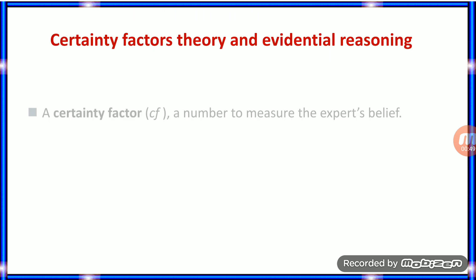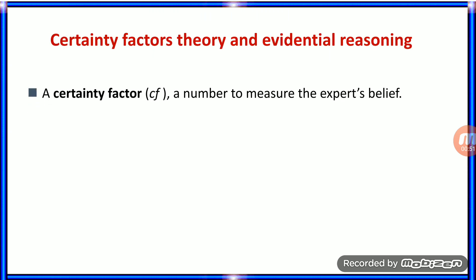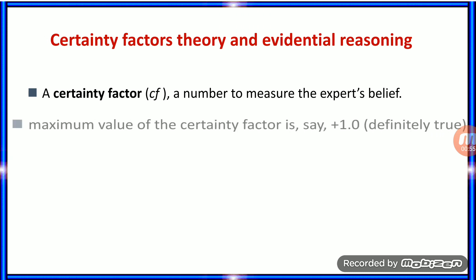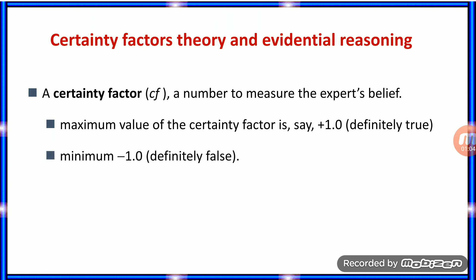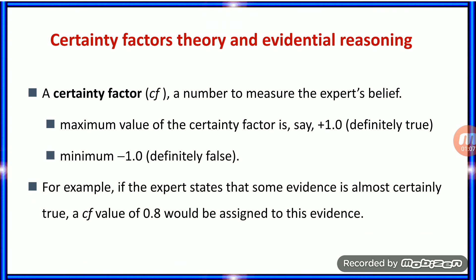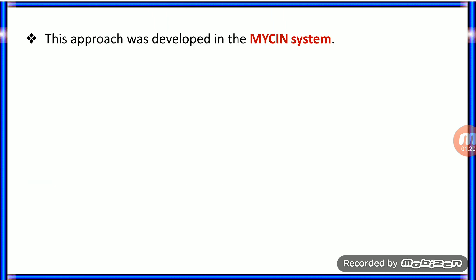So, what is a certainty factor? CF, in short form, is a number to measure the expert's belief. The maximum value of CF is plus 1, meaning it is definitely true. And if it is negative 1, it is definitely false. For example, if the expert states that some evidence is almost certainly true, a CF value will be 0.8, so that you can make a strong assignment to that particular evidence.